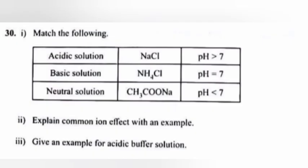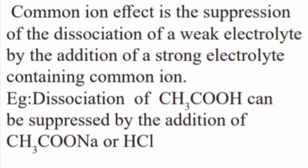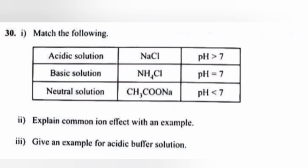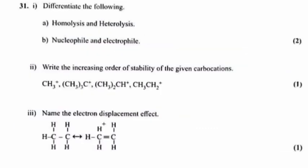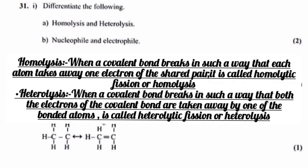Question 30: 1. Match the following. 2. Explain common ion effect with an example. Answer: Common ion effect is the suppression of the dissociation of a weak electrolyte by the addition of a strong electrolyte containing common ion. Example: Dissociation of CH3COOH can be suppressed by the addition of CH3COONa or HCl. 3. Give an example for acidic buffer solution. Answer: Acetic acid plus sodium acetate.